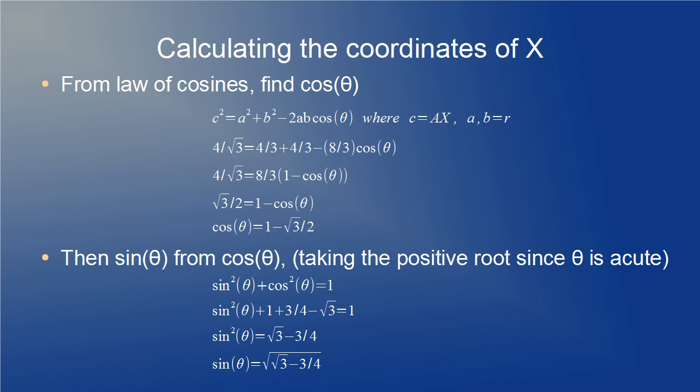Now we can use some trigonometry to simplify the sine and cosine of those angles. We can find theta because we have all three sides of the triangle. Two of those sides are radii of the circle and the other is segment AX. The law of cosines is basically an extension of the Pythagorean theorem. We have A squared plus B squared equals C squared and then a correction of minus 2AB cosine theta when the angle is not a right angle. So after a little algebra, we find cosine theta is 1 minus the square root of 3 over 2. Then sine theta follows from cosine theta by using sine squared plus cosine squared equals 1. We take the positive square root for sine theta since the angle is acute.